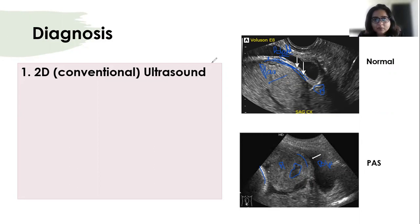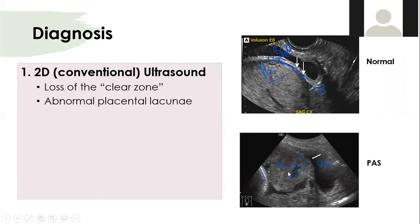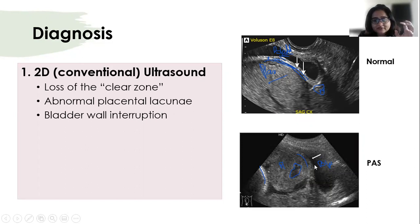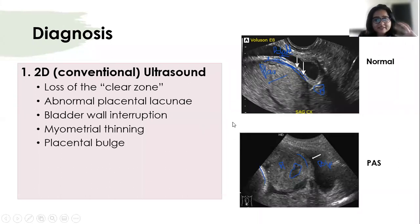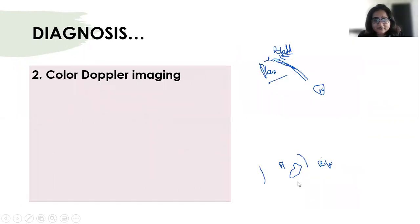On ultrasound, the features of placenta accreta include: loss of the clear zone — the hypoechoic area behind the placenta separating it from the myometrium; abnormal placental lacunae or venous lakes — blood-filled lakes inside the placenta; bladder wall interruption especially in increta or percreta; myometrial thinning; placental bulge; exophytic mass; and in percreta, a focal mass seen inside the bladder.